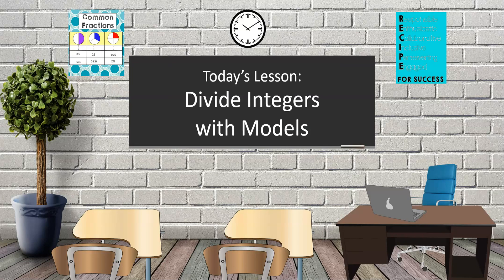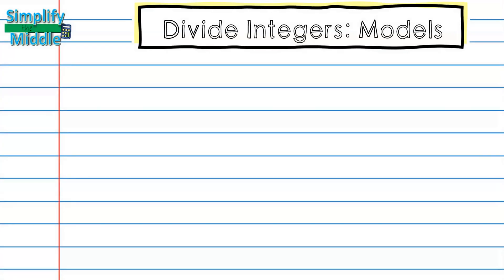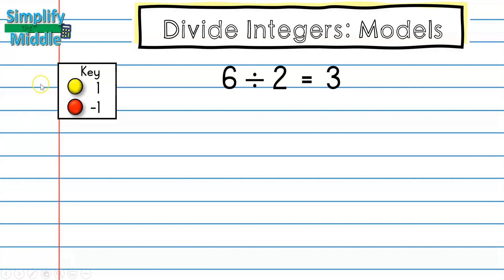Hi and welcome to today's lesson: Divide Integers with Models. We are going to be using the counter chips in this lesson. Yellow is going to represent positive 1 and red will represent negative 1.